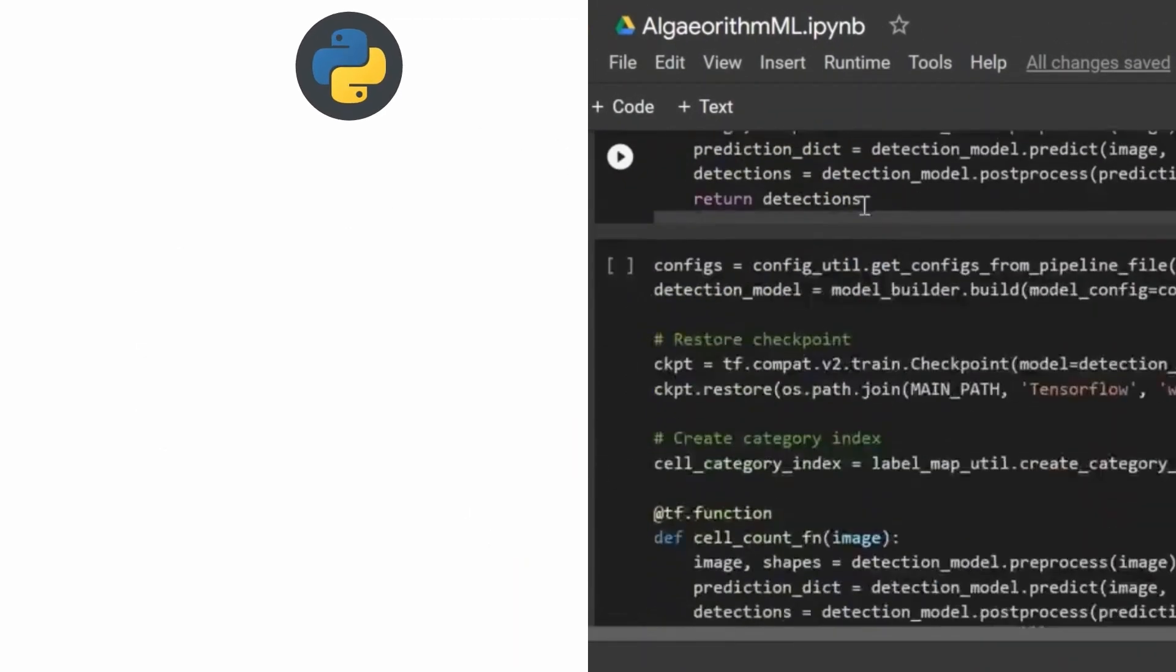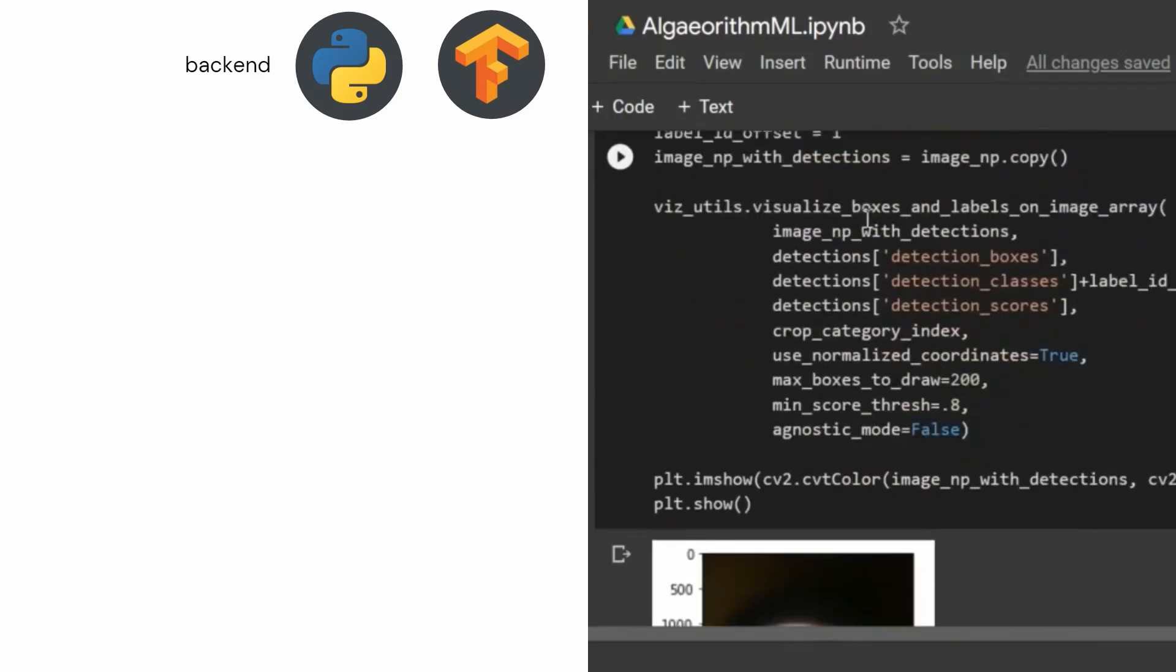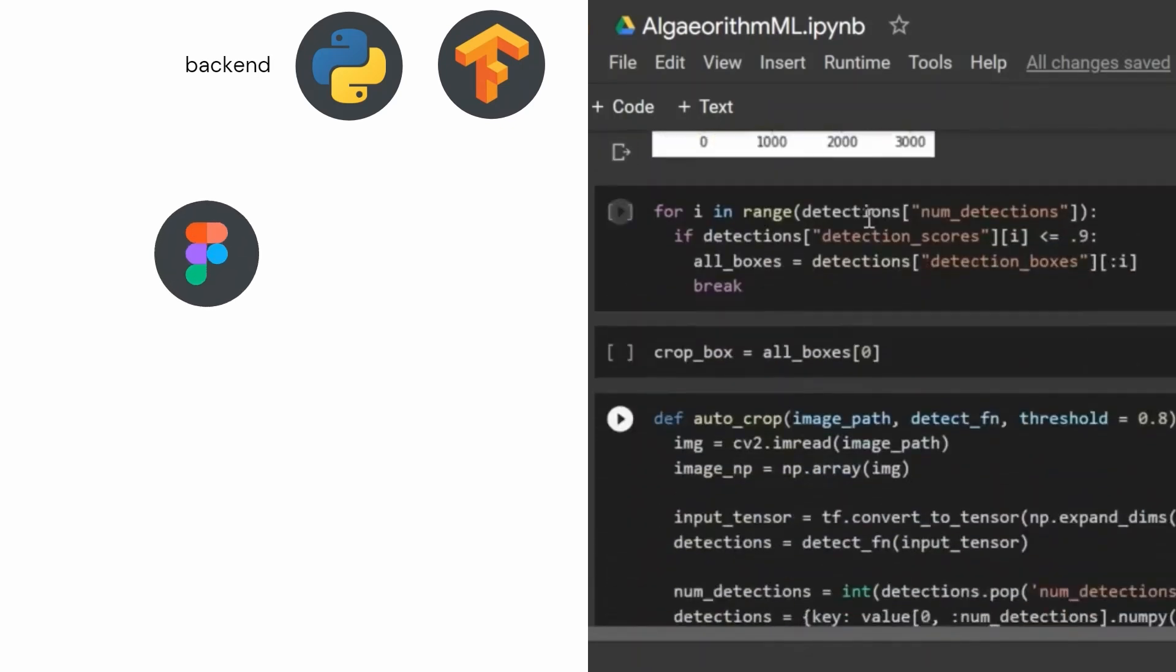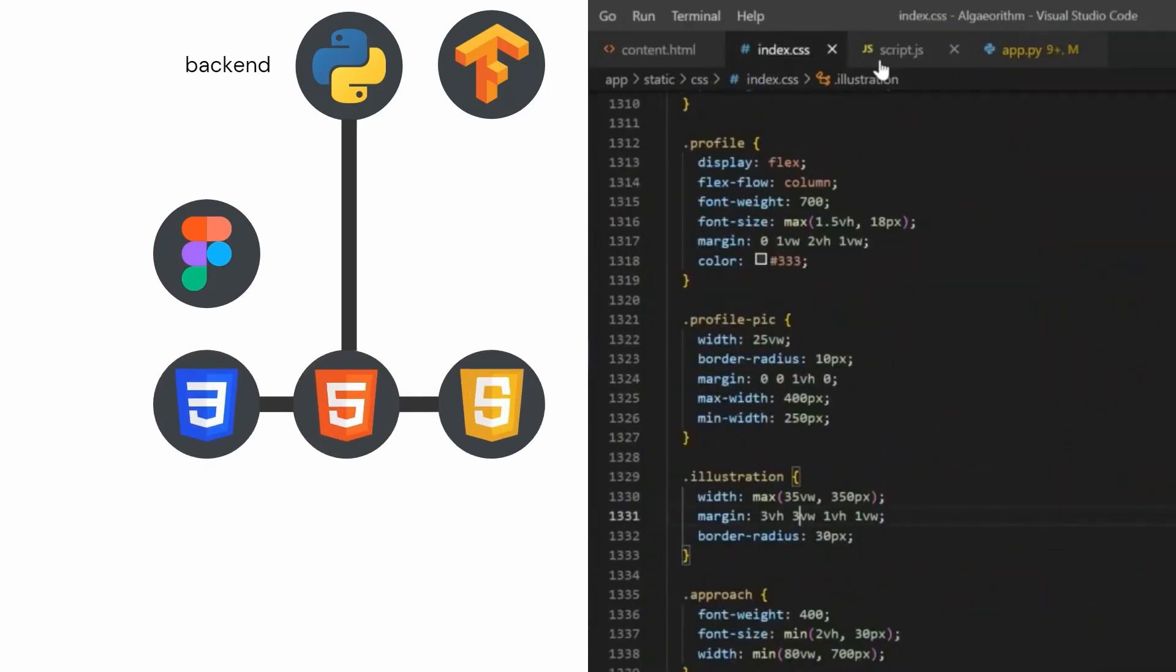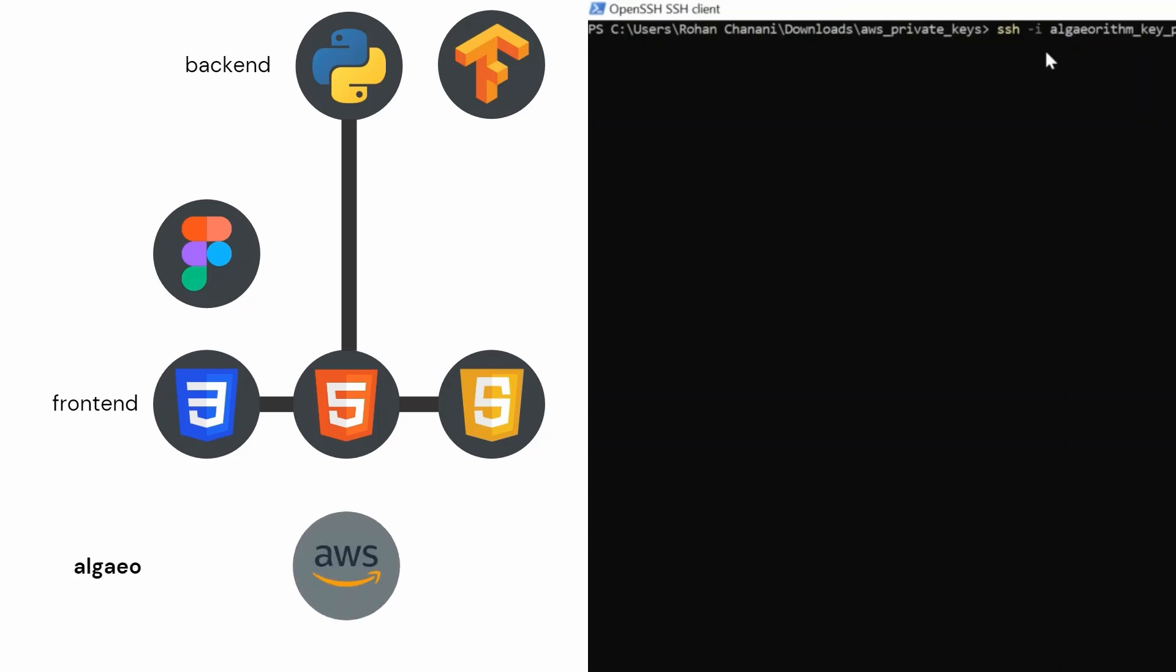We used Python and the Python library TensorFlow to train the neural network and build the application's back-end. The front-end was designed in Figma and built with HTML, CSS, and JavaScript. The entire application is deployed through a scalable AWS framework.